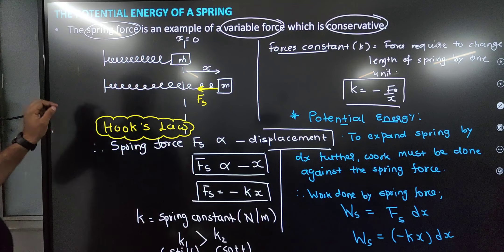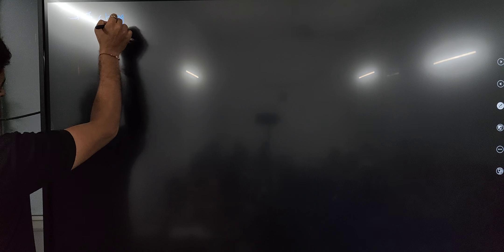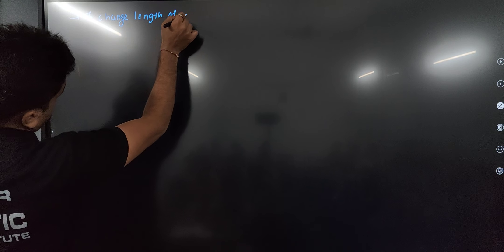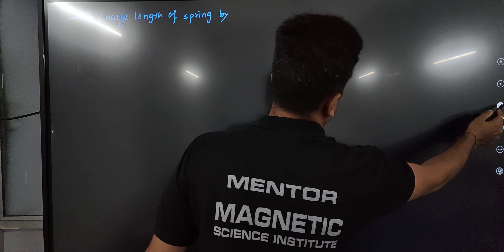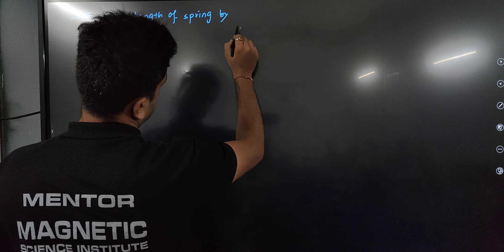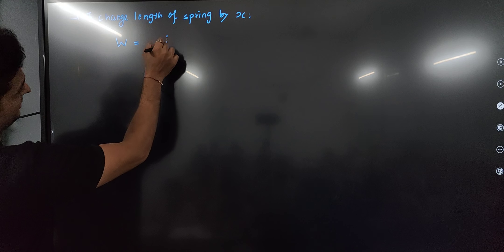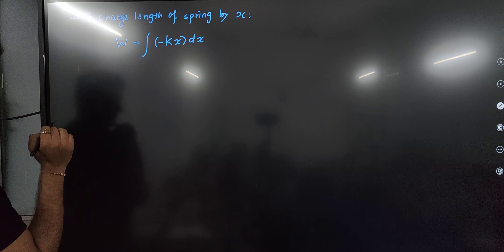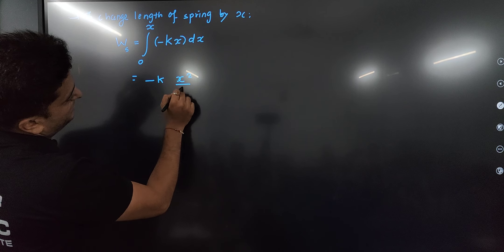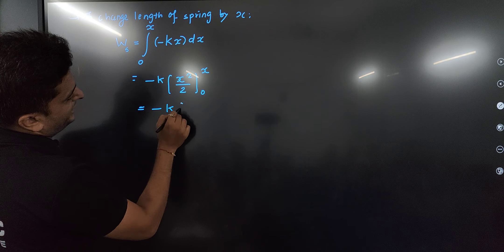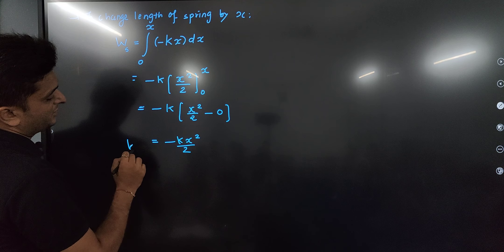To change the total length of the spring by x, we integrate the small work element -kx dx from 0 to x. Integrating gives -k times (x²/2) evaluated from 0 to x. Applying the limits: upper limit x and lower limit 0 gives us -k·x²/2. This is the work done by the spring force, which is negative.